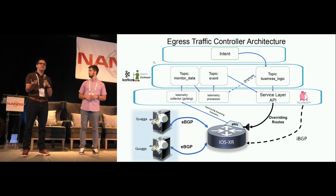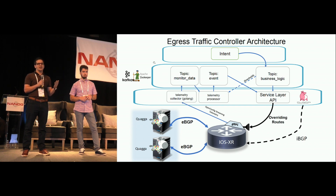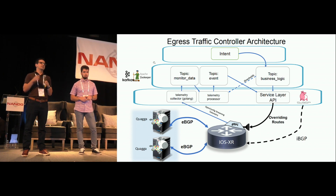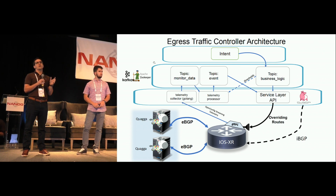We then had another microservice applying the business rules, basically looking for a given threshold being crossed. It could then create an alarm, which was another message pushed back to the Kafka bus. Another microservice listening to that topic would then trigger changes — using either the Cisco Service Layer API to program the FIB on the router, or through GoBGP — to program the routing table.